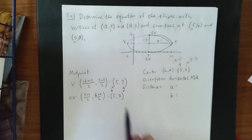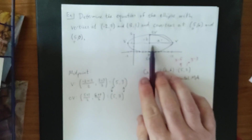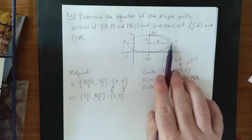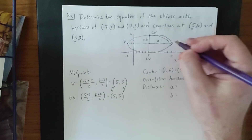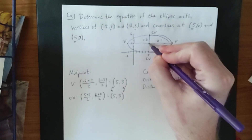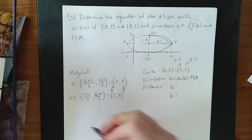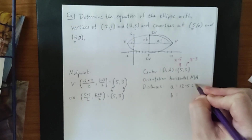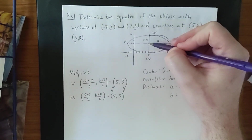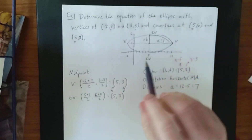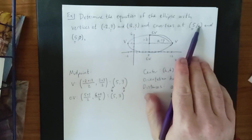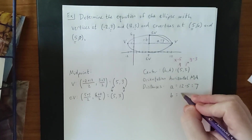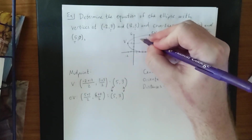With our center at 5, 3, for the value of a we need only the difference in x-coordinates since they lie on the same horizontal line. Taking the vertex at 12, 3 and subtracting the center's x-coordinate of 5 gives a = 7. For b, we use y-coordinates: the top co-vertex is at 5, 6, so 6 minus 3 gives b = 3.